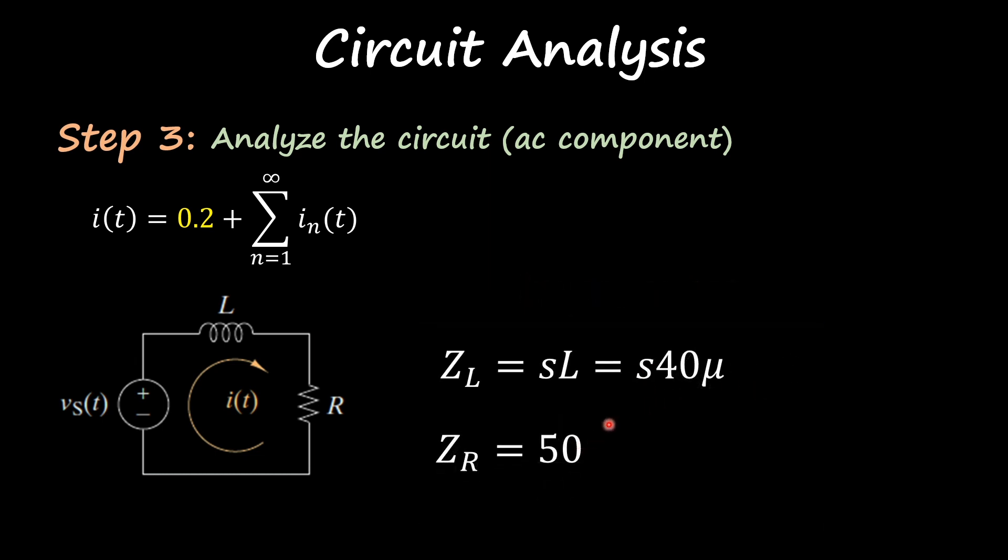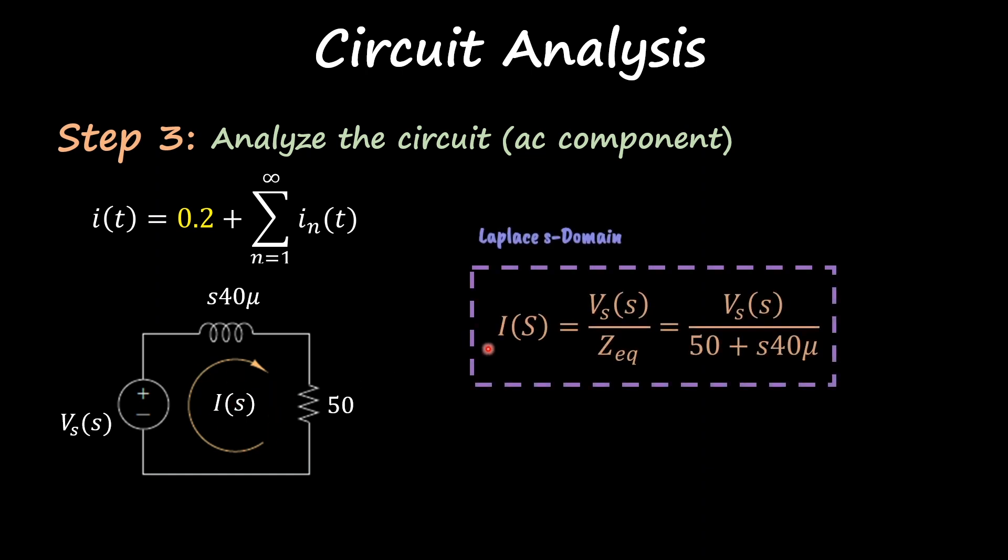In this case we only have an inductor and resistor, so we get s times 40 micro and a Z_R of 50. We place that into our circuit and now I can treat this as a normal resistive circuit and I can find what we call the transfer function. Our current, just applying Ohm's law, so the voltage divided by the equivalent resistance, in this case 50 plus s*40 micro.